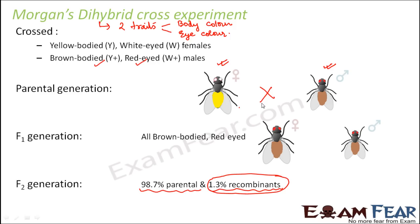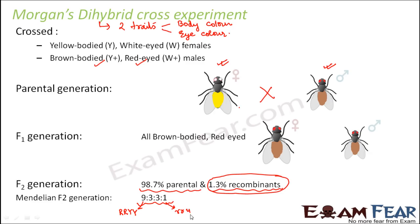According to Mendel's rules, the F2 generation ratio is 9:3:3:1. In that ratio, the 9 and the 1 represent parental-type combinations — for example, homozygous round yellow seeds and homozygous wrinkled green seeds — while the two groups of 3 represent new combinations, that is, the recombinants. So in Mendel's genetics, a significant proportion of recombinations are produced in the F2 generation.